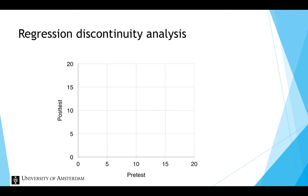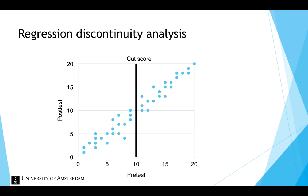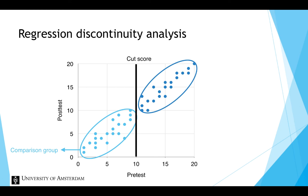Here the pretest score on the ADHD-related symptoms is on the x-axis and the posttest score on the y-axis. The vertical line in this graph represents the cut score at a pretest score of 10. Each dot in this graph indicates a single child's pretest and posttest score. Children below the cut score won't receive the treatment, so they will be in the comparison group, and children above the cut score will receive the mindfulness treatment, so they are in the treatment group.